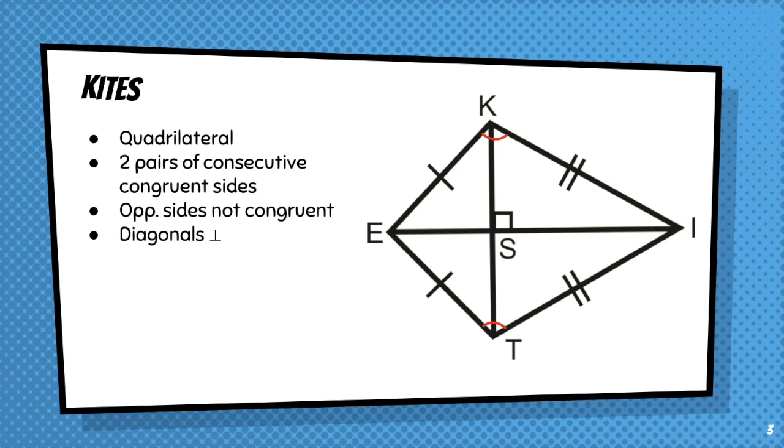Also notice that the diagonals are perpendicular. And finally, there's exactly one pair of opposite angles that are congruent. You can see that angle K is congruent to angle T.